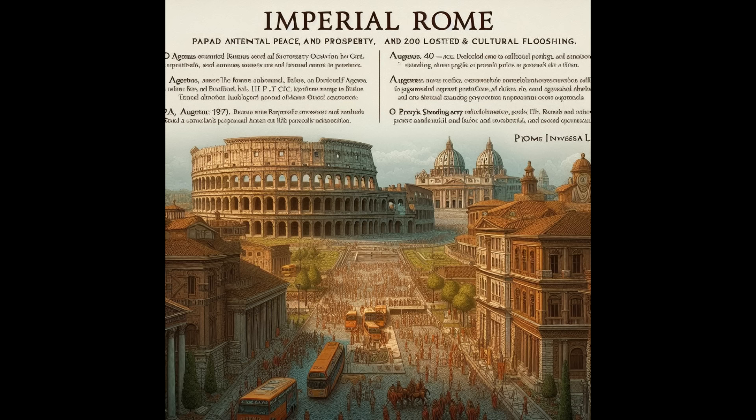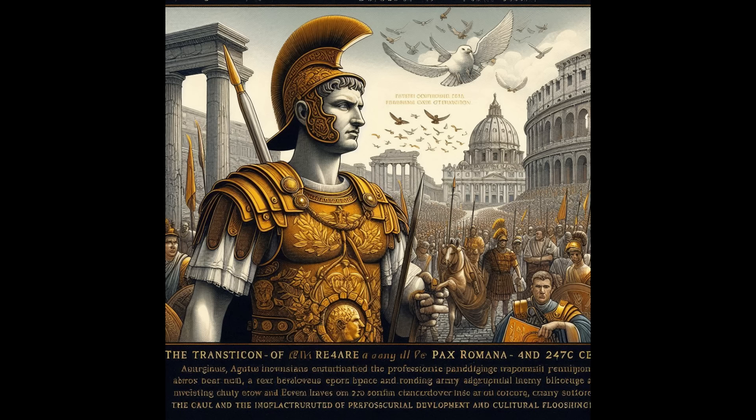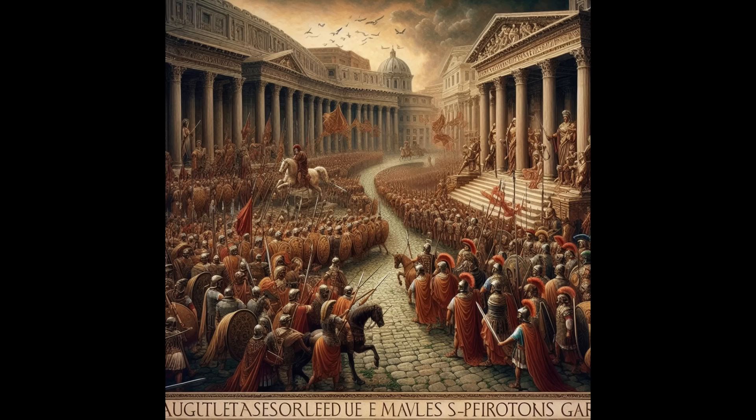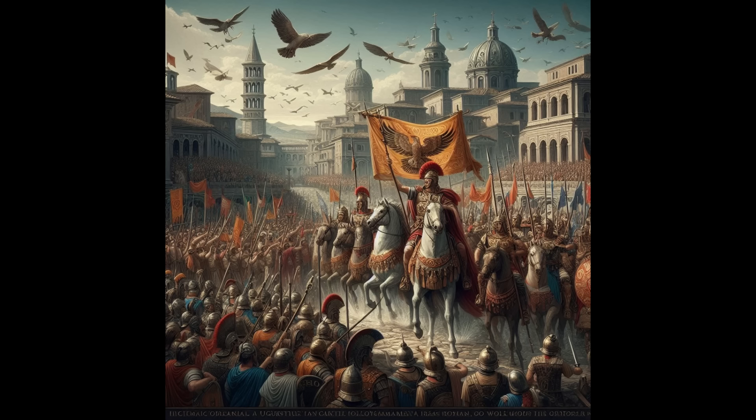Hadrian, 117 to 138 CE: consolidated and fortified the empire's borders, building Hadrian's Wall in Britain. He also promoted cultural and architectural advancements including the Pantheon. Hadrian's policies of strengthening defenses and cultural patronage left a lasting legacy. He traveled extensively across the empire, overseeing projects and fostering unity.